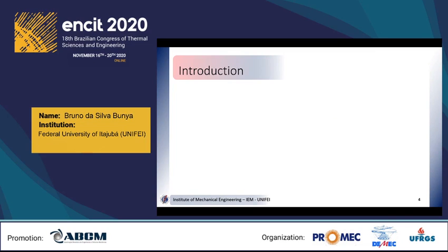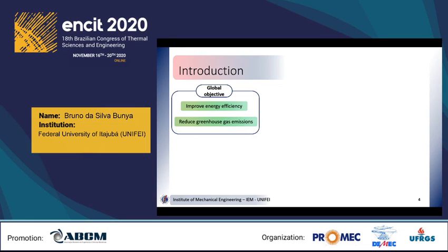To mitigate this problem, increasing the energy efficiency of the production process and reducing greenhouse gas emissions has become the main objective for the sustainable development of this industrial activity. Among the solutions, we have the Organic Rankine Cycle, known as ORC, which shows itself as a promising technology.